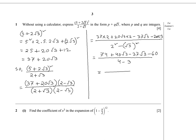In the numerator, 74 - 60 = 14 and 40 - 37 = 3, so we get 14 + 3√3, divided by 1. We have expressed the given expression in the form p + q√3, where p = 14 and q = 3. Question 1 is done.